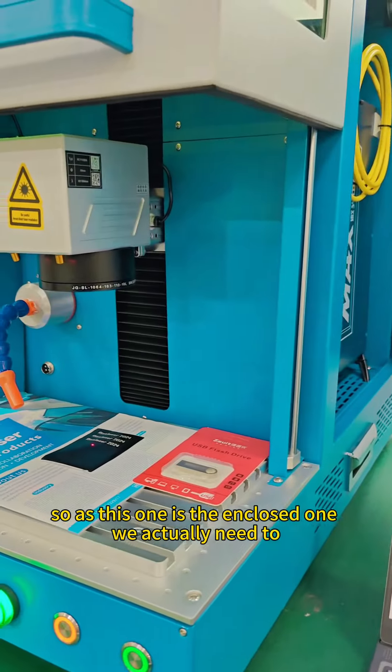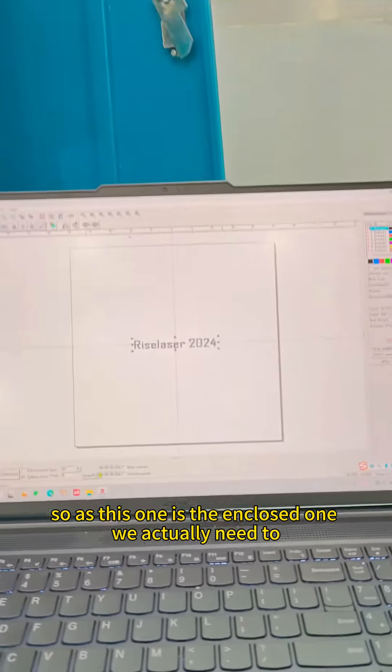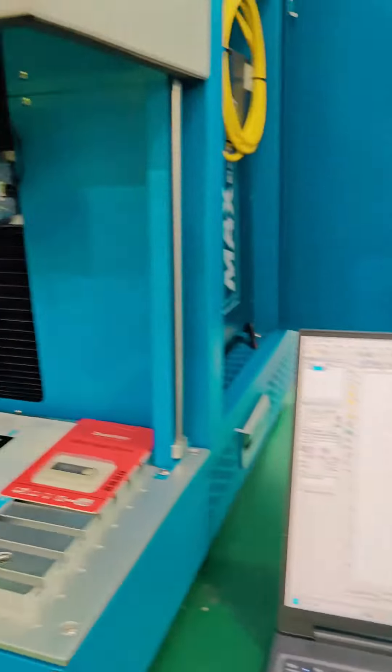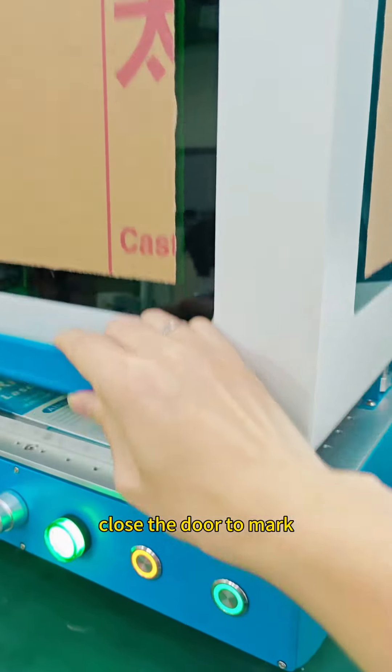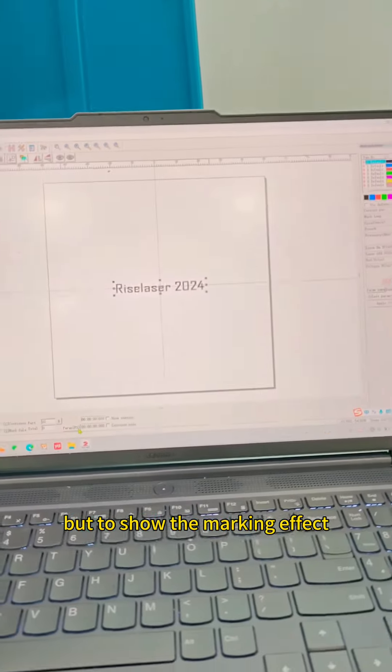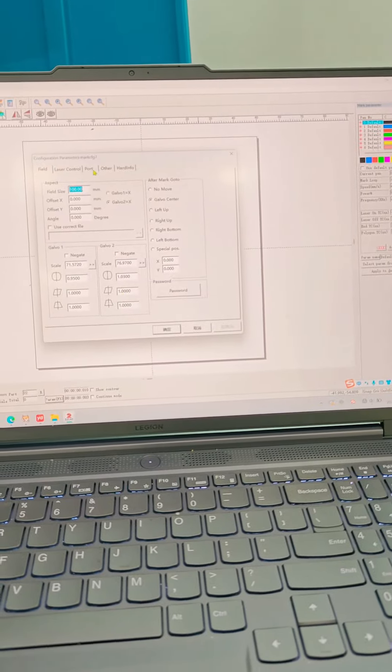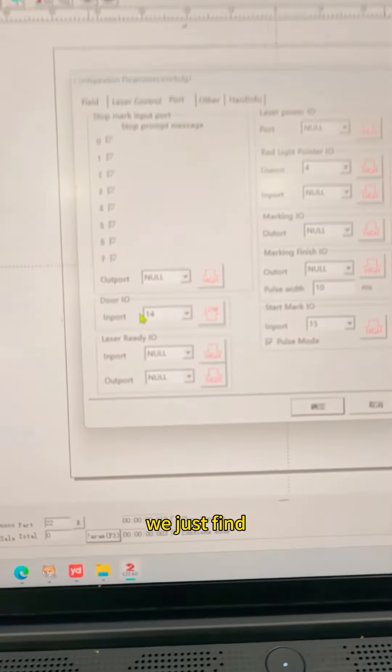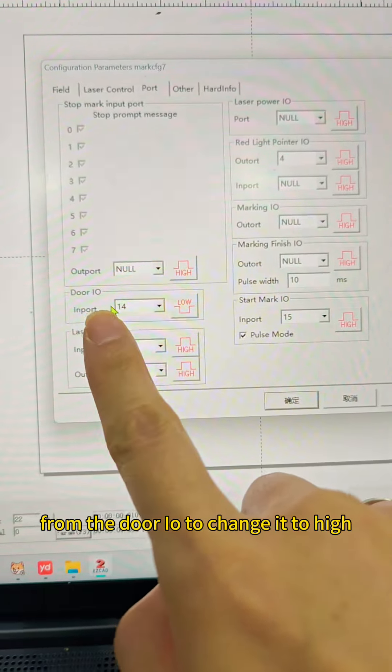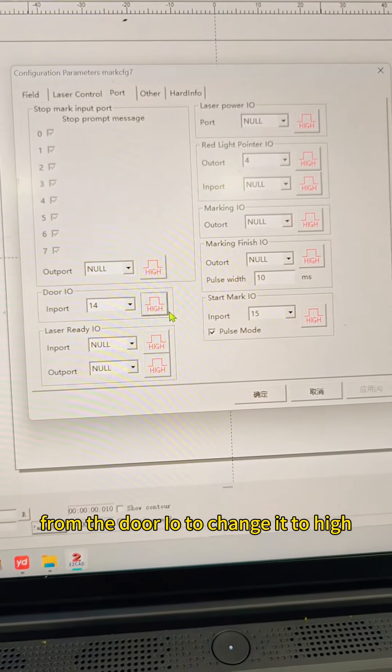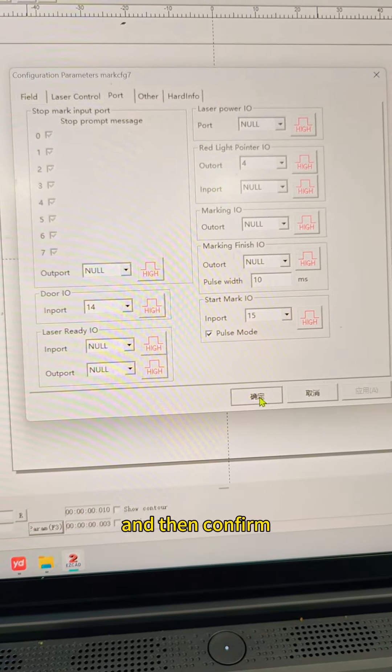So as this one is the enclosed one, we actually need to close the door to mark. But to show the marking effect, we just find from the door IO to change it to high and then confirm.